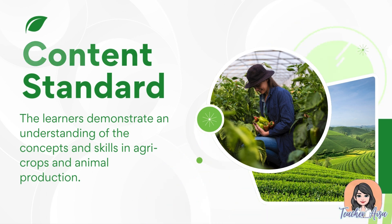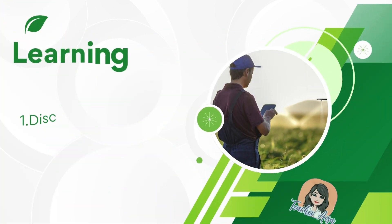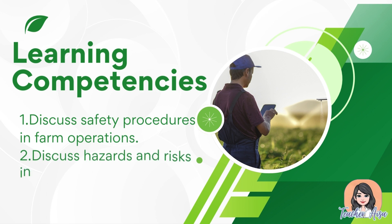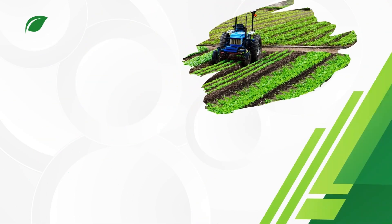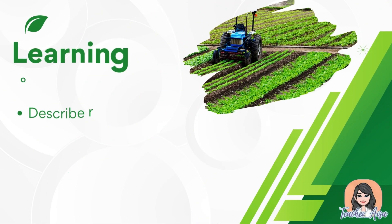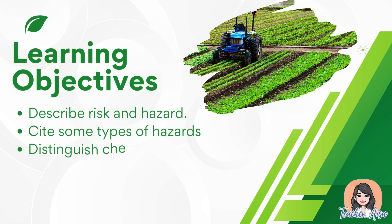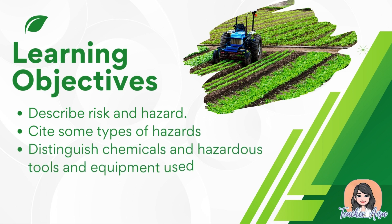For our learning competencies: one, discuss safety procedures in farm operations; two, discuss hazards and risks in farm operations. For our learning objectives: first, describe risk and hazard; second, cite some types of hazards; third, distinguish chemicals and hazardous tools and equipment used in farm work.